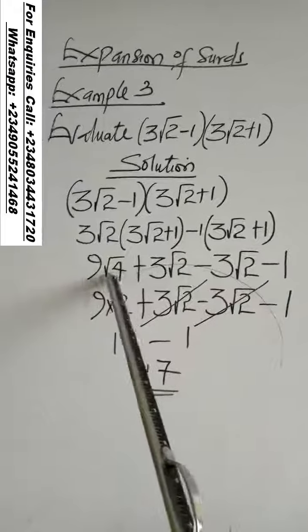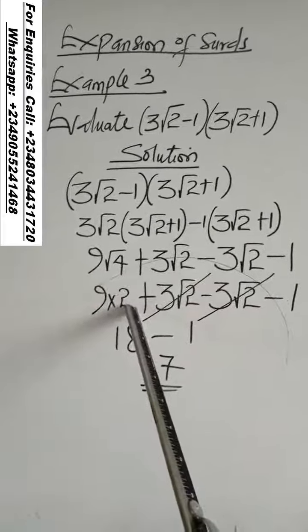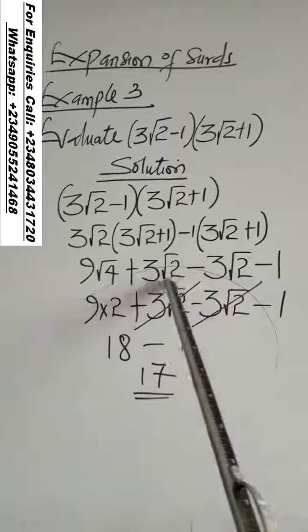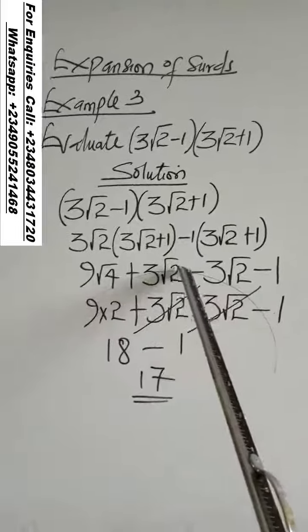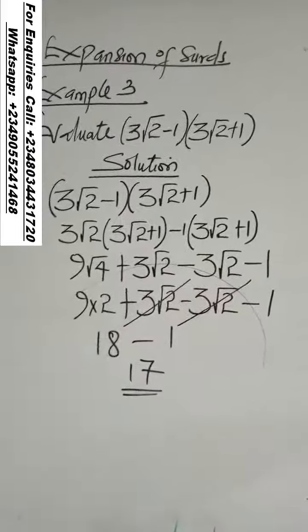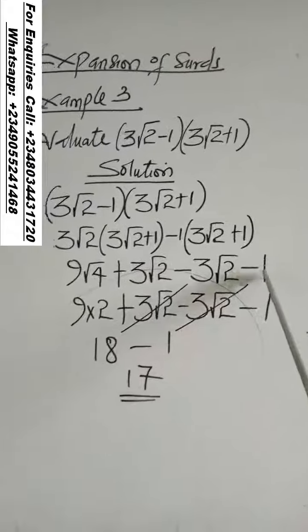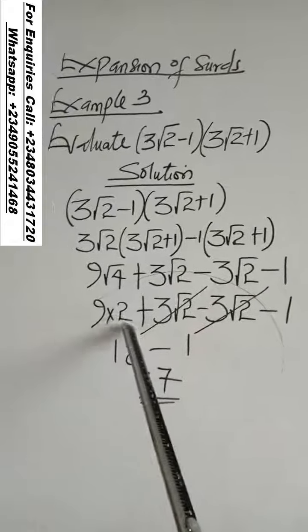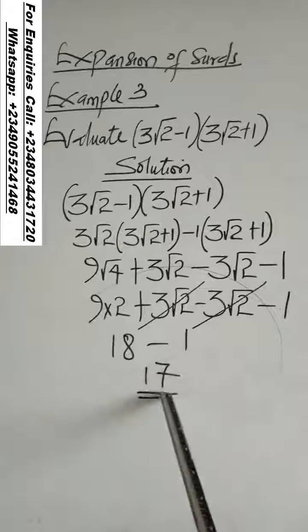Now, if you look at it, square root of 4 is 2. If you look at these two, they are similar surds. 3√2, minus 3√2. It will go because they are the same thing. Minus 1. So, 9 times 2 is 18. 18 minus 1, 17.